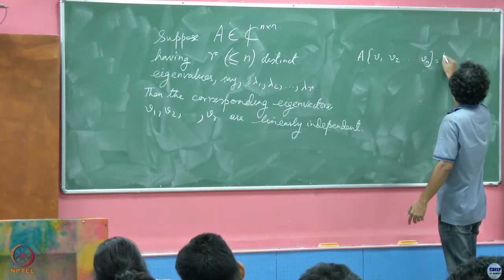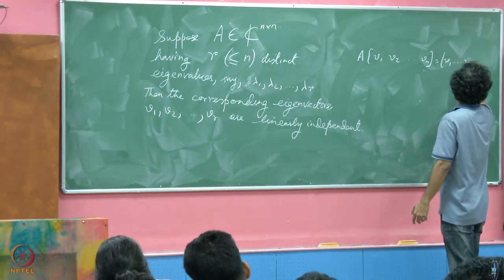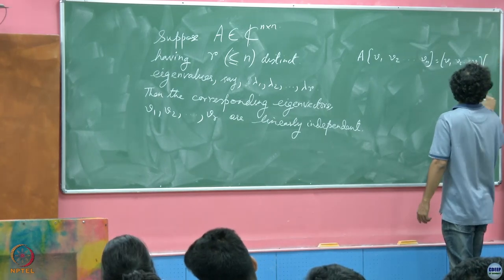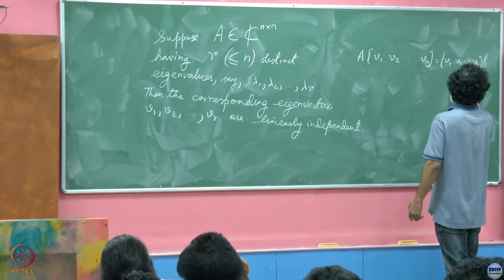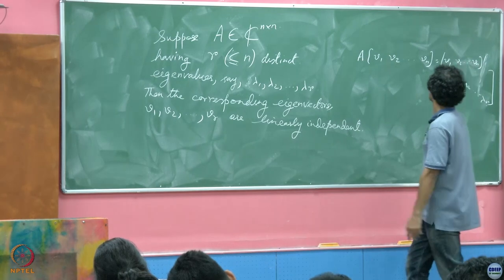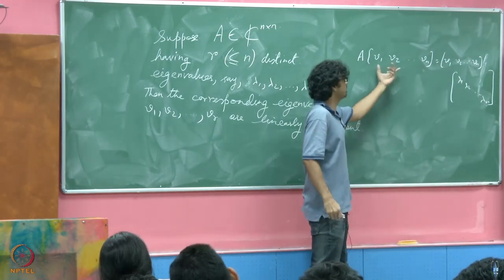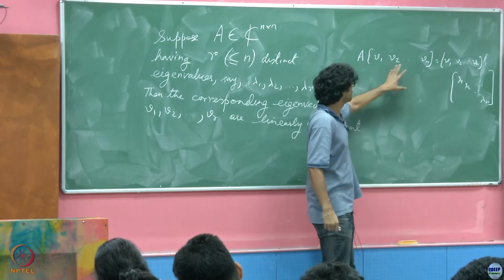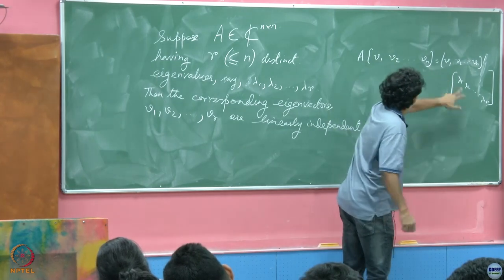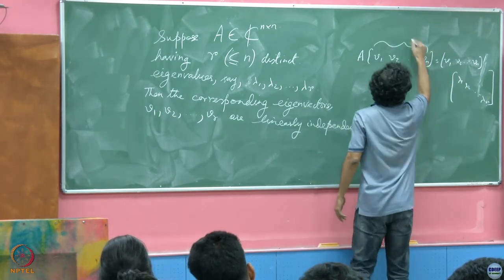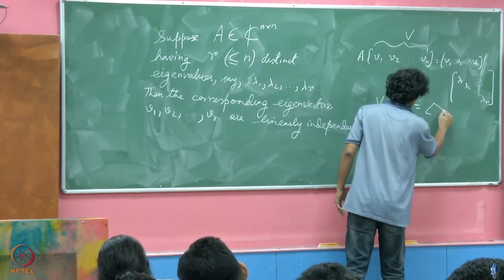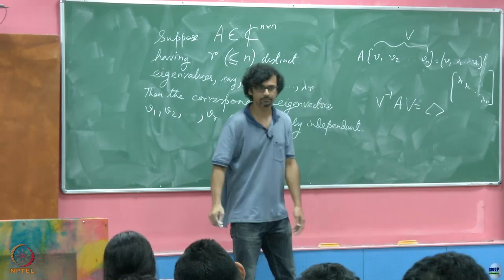If this is going to be non-singular, then we can write this as V1, V2, Vn times lambda 1, lambda 2 till lambda n. So if the VIs are linearly independent, then this is invertible, non-singular. Therefore this lambda is exactly equal to, let us call this V, then we will have V inverse AV, and bingo the result.